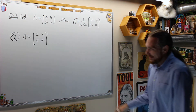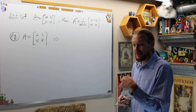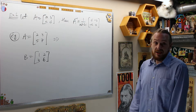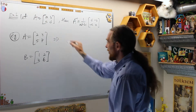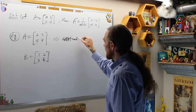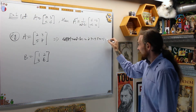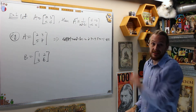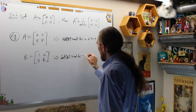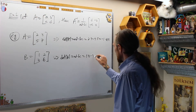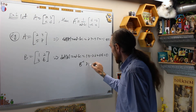Let's try a numerical example with the first four prime numbers. For 2 by 2 matrices, first compute the determinant; if it's zero, you can stop. The determinant of A is AD minus BC = 2×7 - 3×5 = 14 - 15 = -1, which is not zero, so A's inverse exists. The determinant of B is 1×6 - 3×2 = 6 - 6 = 0, so B inverse does not exist.